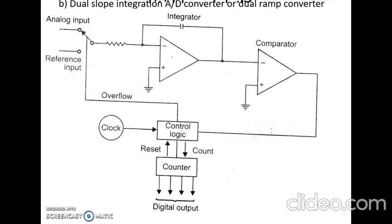Now let us look at the dual slope integration analog-to-digital converter, also called the dual ramp converter. This type is more commonly used than the single ramp converter because it has the advantage of excellent noise rejection. However, its only limitation is that it is very slow in operation compared to other types of ADCs.